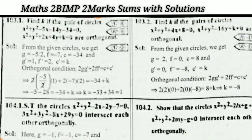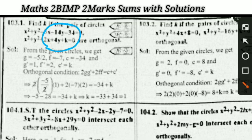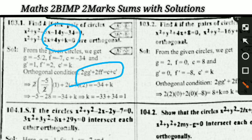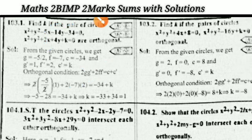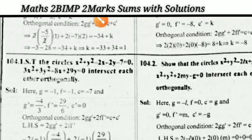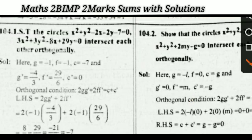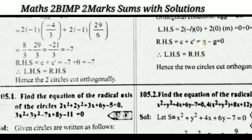Next: find the value of k if the pair of circles are orthogonal to each other — a very important question. The condition for orthogonality is 2g·g′ + 2f·f′ = c + c′. Multiple questions follow this same model: find k if circles are orthogonal, and show that two circles are orthogonal by verifying the same condition.